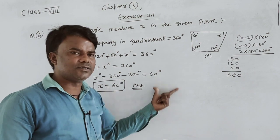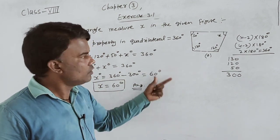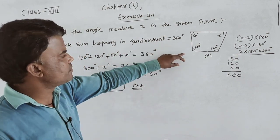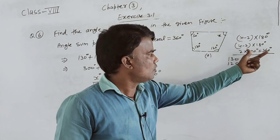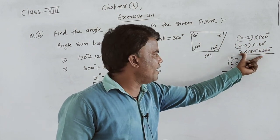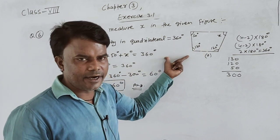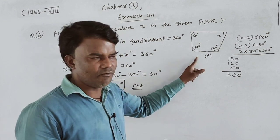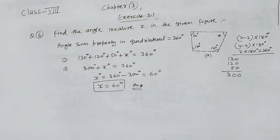तो यह question number 6 का A part था। बाकी के parts भी इसी के according आप कर सकते हो। लेकिन आपको बस number of sides देखनी है, angle sum property use करनी है, और total angle find करके X की value निकालनी है — चाहे वो quadrilateral हो, triangle हो, pentagon हो, या कोई भी polygon।